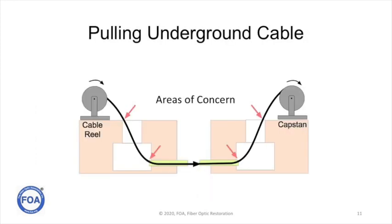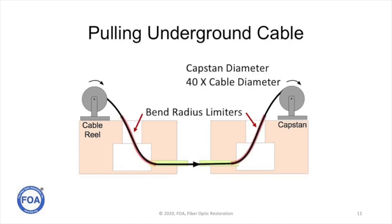When you're pulling underground cable, the areas of concern are the entrance and exit to the underground conduit where the cable can be bent too tightly, and likewise the entrance and exit from the manhole where the cable can be bent when under tension. You also have to be concerned by the size of the capstan you're using to pull the cable — it has to be large enough to meet the bend radius or bend diameter requirements. You need to use bend radius limiters within the manhole itself to get from the conduit to the outside world. The capstan should be about 40 times the diameter of the cable itself, so a half-inch cable needs at least a 20-inch capstan.